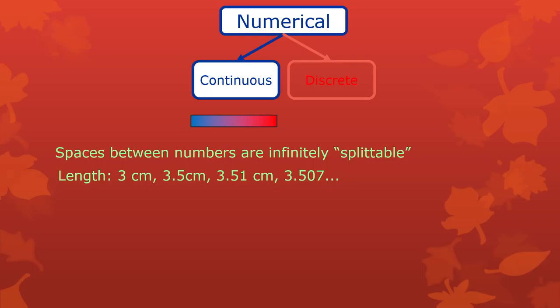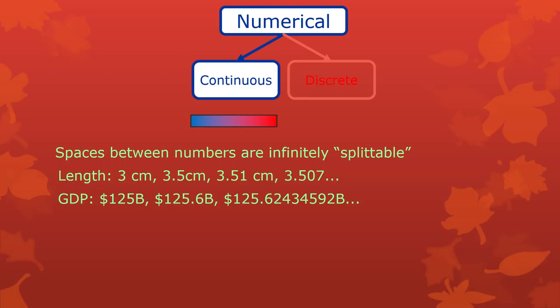Gross domestic product — you can talk about it in general terms and say it's 125 billion, or 125.6 billion, or get much more specific, even down to fractions of a cent. So it's infinitely splittable. Money and value like that is splittable. This doesn't mean you are always capable of measuring so precisely yourself — your measurement ability always tops out because of the tools that you have.